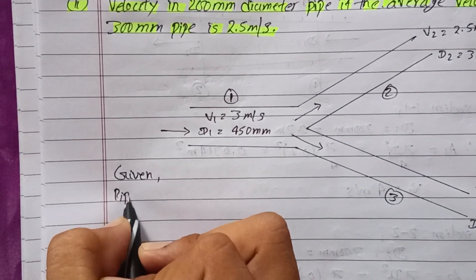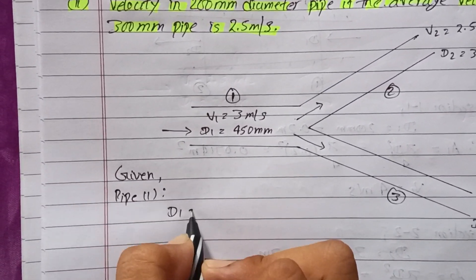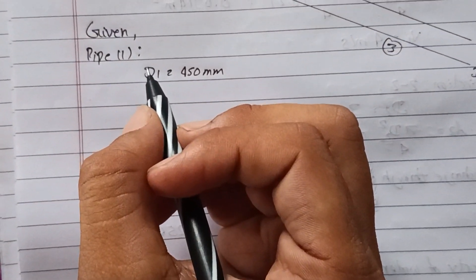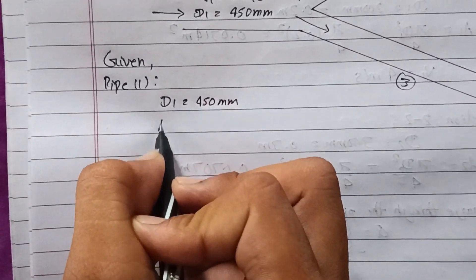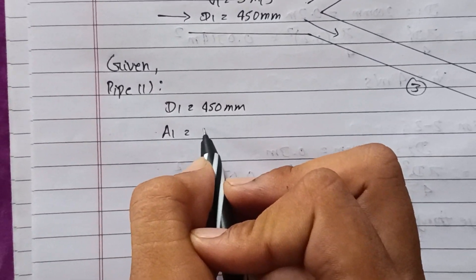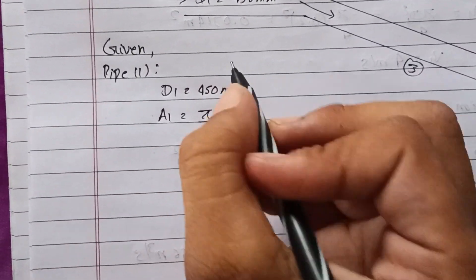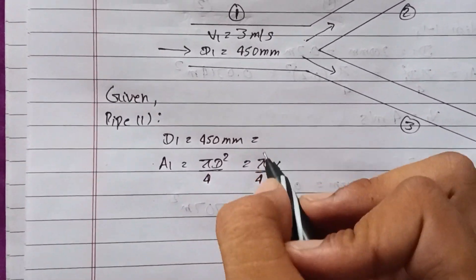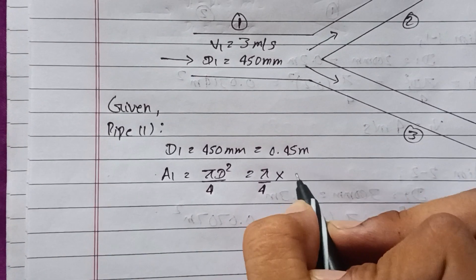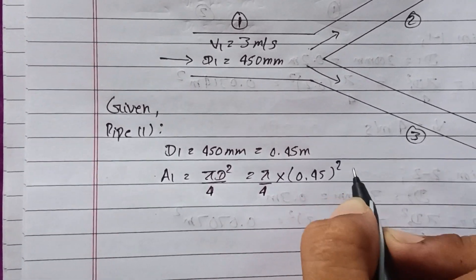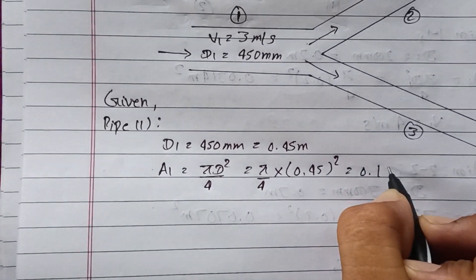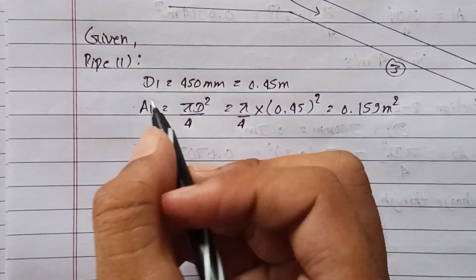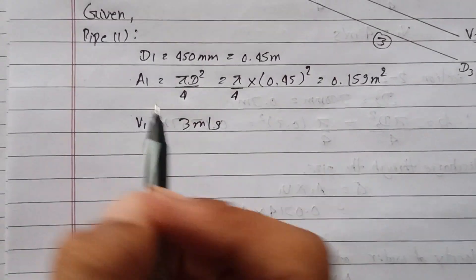For Pipe 1, the diameter D1 equals 450 mm, which is 0.45 meters. The area A1 equals pi times D1 squared divided by 4, which is pi over 4 times 0.45 squared. The answer is 0.159 meters squared. The velocity V1 is 3 meters per second.